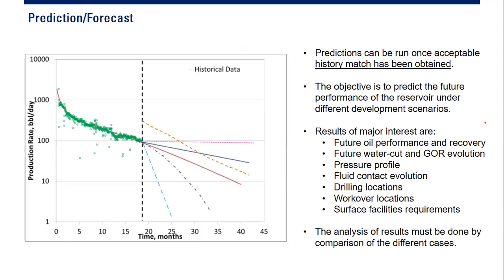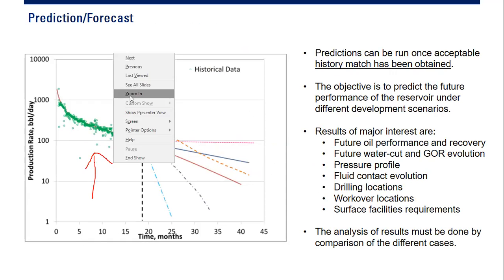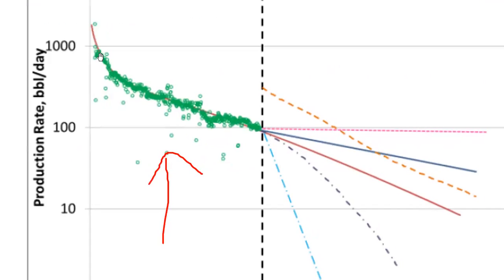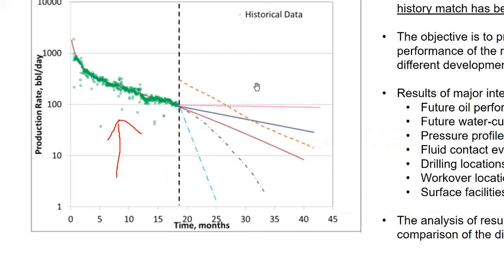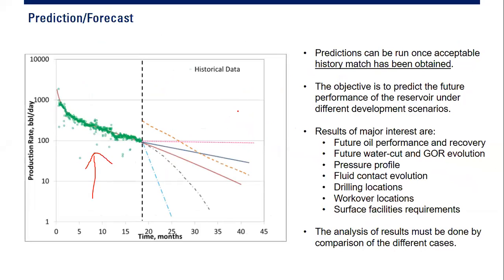For example, this is the production forecast: the green dots are the actual data, the red line is the history matching model, and then you create several scenarios — drilling, workover, no further activity — and you create a forecast like this one.